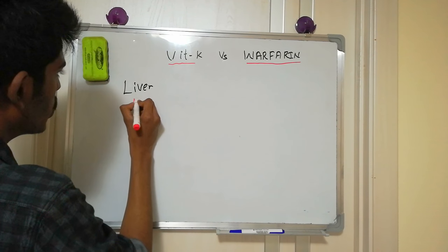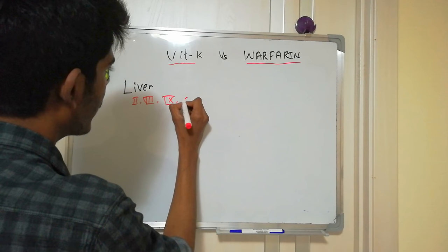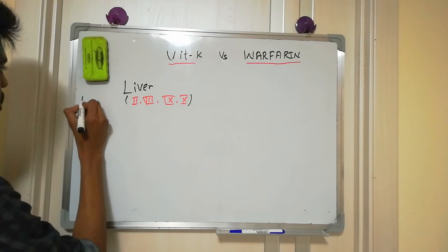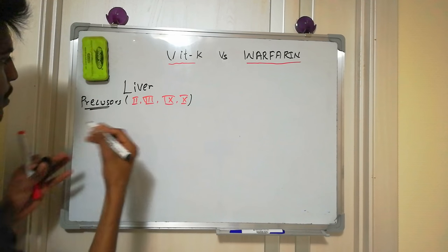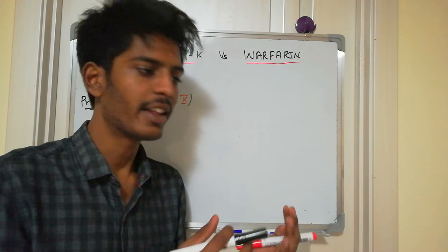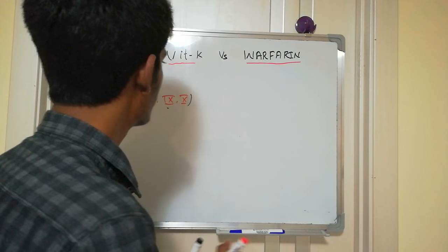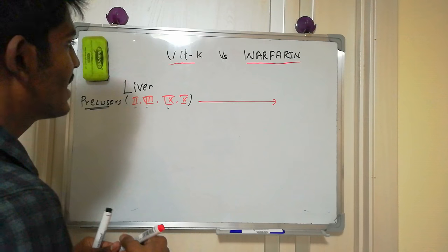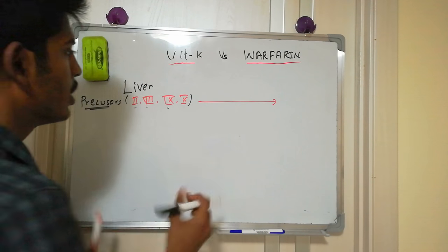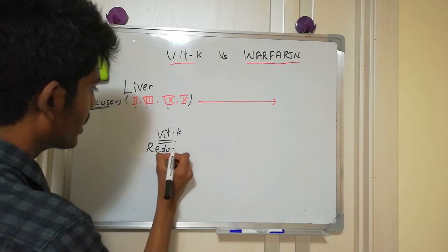We have clotting factors 2, 7, 9, and 10. These factors exist in the form of precursors. These precursors of factors 2, 7, 9, and 10 have to be formed in such a way that they are ready for clot formation — converted from precursors into active factors. Vitamin K is required as a coenzyme, acting like a catalyst for this conversion.